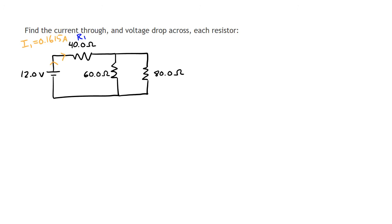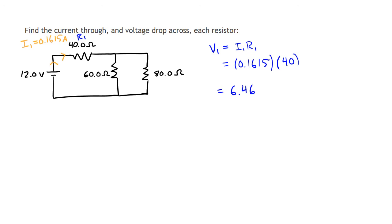If we know the resistance of R1 and the current going through R1, we can find the voltage drop across R1. Using Ohm's Law: V1 equals I1 times R1. Plugging in those values and doing the calculation, we get a voltage drop across R1 of 6.462 volts.